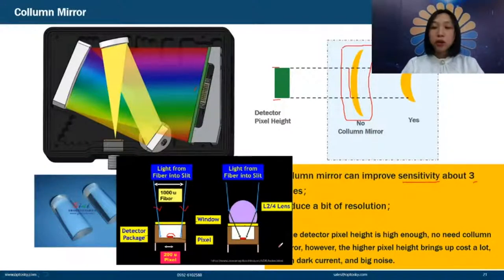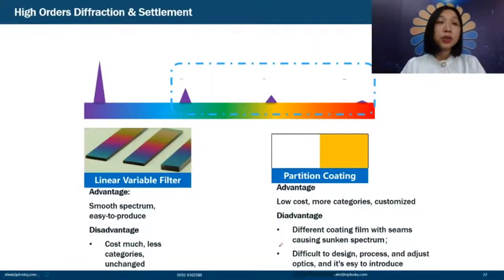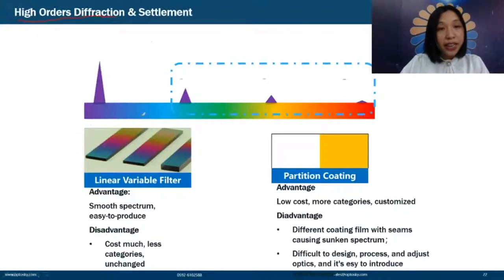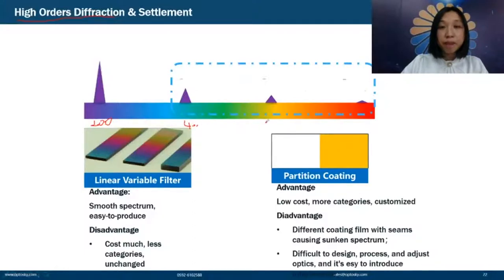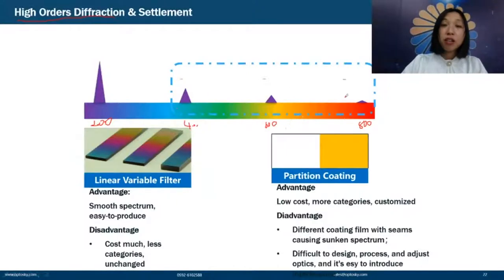After the cylindrical mirror, we introduce higher-order diffraction and how to eliminate it. Gratings generate not only the useful first-order peak (e.g., at 200 nm) but also second-, third-, and fourth-order peaks appearing at 400, 600, and 800 nm. These are harmful peaks that distort measurement results. We must eliminate them while keeping only the useful first-order peaks.